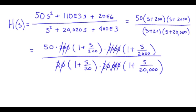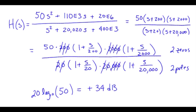So we have two zeros to plot, two poles, and then we need to convert our constant into dB form. So let's do 20 log 10 of 50, and that gives us plus 34 dB. So this is our constant offset.